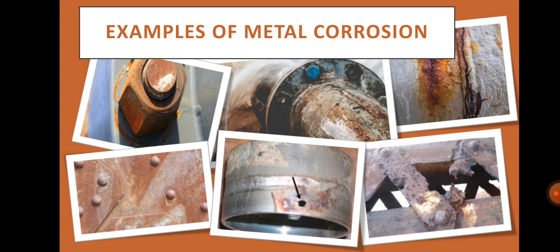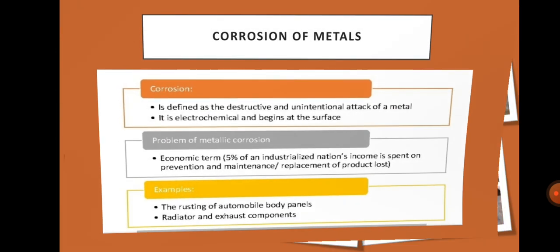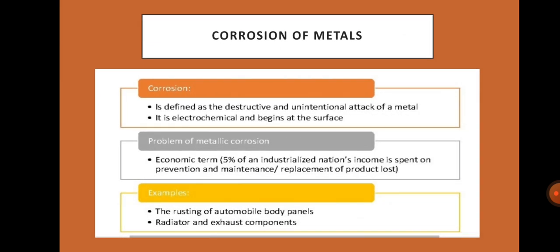These are examples of metal corrosion. Corrosion is defined as the destructive and unintentional attack of metal. It is electrochemical and begins at the surface.